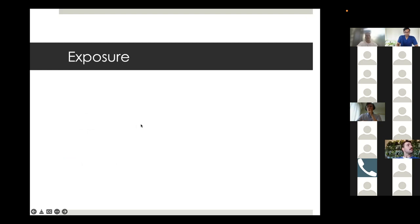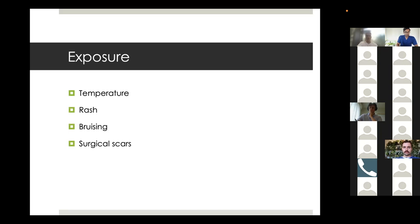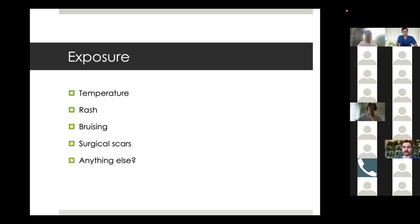Moving to exposure - check temperature: are they febrile, afebrile, or hypothermic? Hypothermia is more common in neonates and can be a sign of sepsis. Look for any rashes - viral exanthems or bacterial causes like meningococcal. Any bruising that might indicate low platelets or non-accidental injury. Any surgical scars that give an idea of past pathology - for example, if they have an appendectomy scar and right-sided pain, probably not appendicitis.